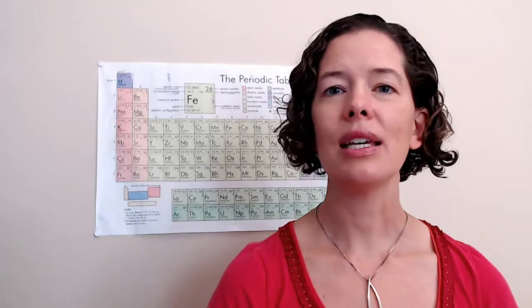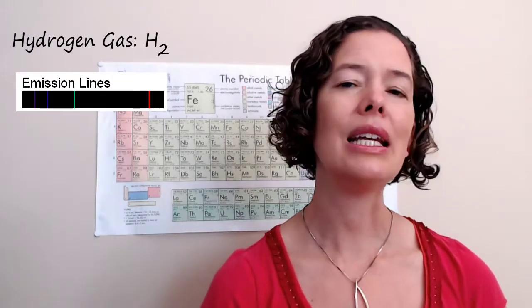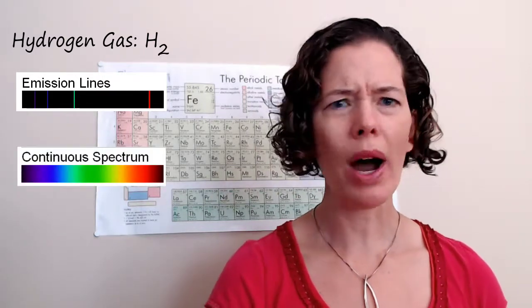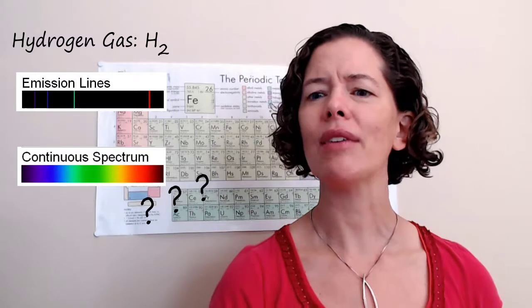So in 1900 Planck was studying electromagnetic radiation and specifically he was looking at something called the emission spectrum of hydrogen. Now hydrogen when you bombard it with energy gives this spectrum and you can see it's only a few lines. Planck wanted to know why is it not continuous? Why are we only seeing these specific lines?